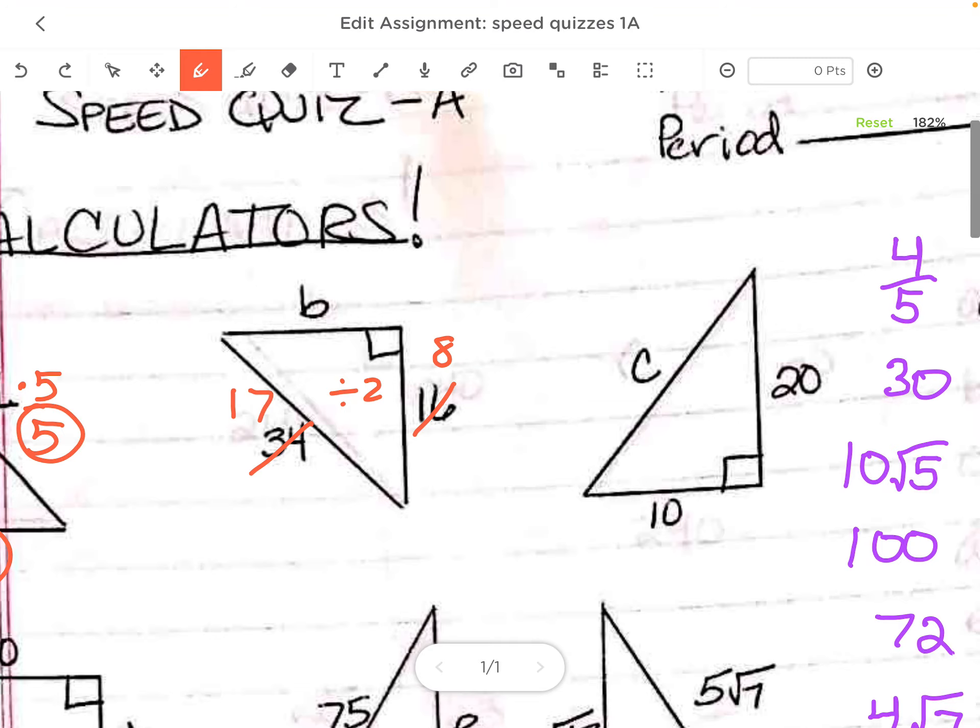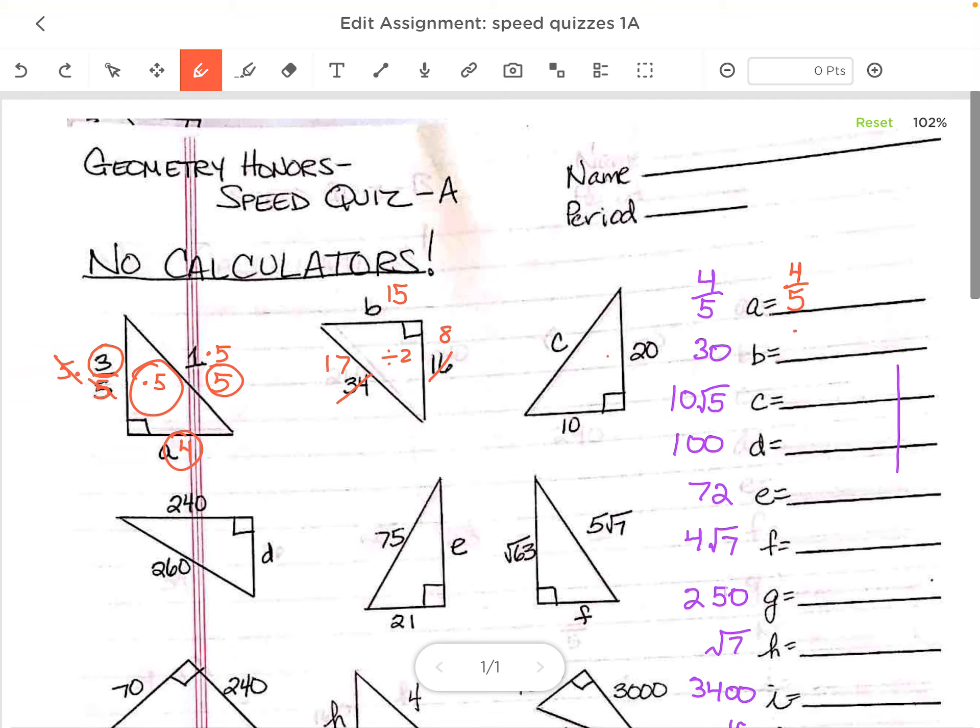So you can always go back to your triples. And this is an 8, 15, 17. So this is, again, 15, but because I divided by 2, I have to multiply by 2, and my answer is 30.